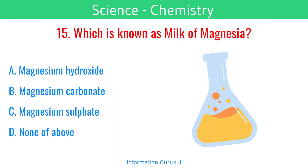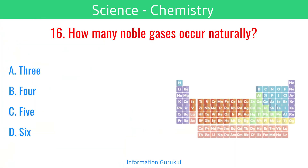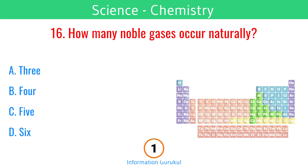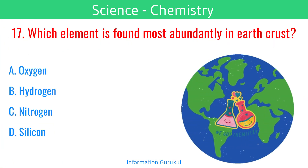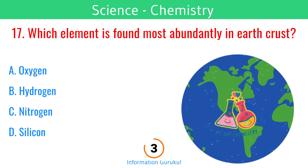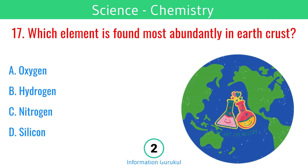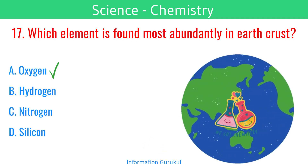Which is known as milk of magnesia? Magnesium hydroxide. How many noble gases occur naturally? Six. Which element is found most abundantly in earth's crust? Oxygen.